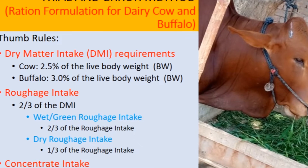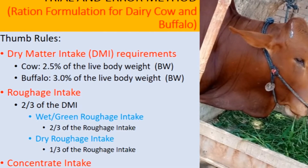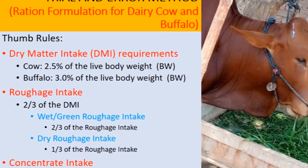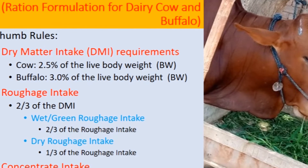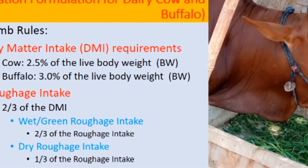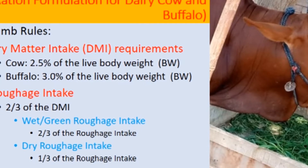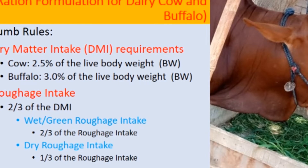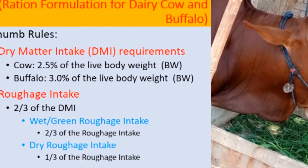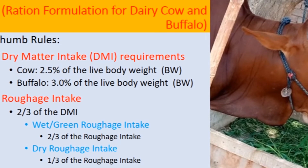The total roughage intake should come two-thirds from green roughages and one-third from dry roughages. Green roughages include silage, green fodder, or other forages. Dry roughages include wheat straw or other dry materials. Concentrate is usually a compound feed prepared for animal feeding.